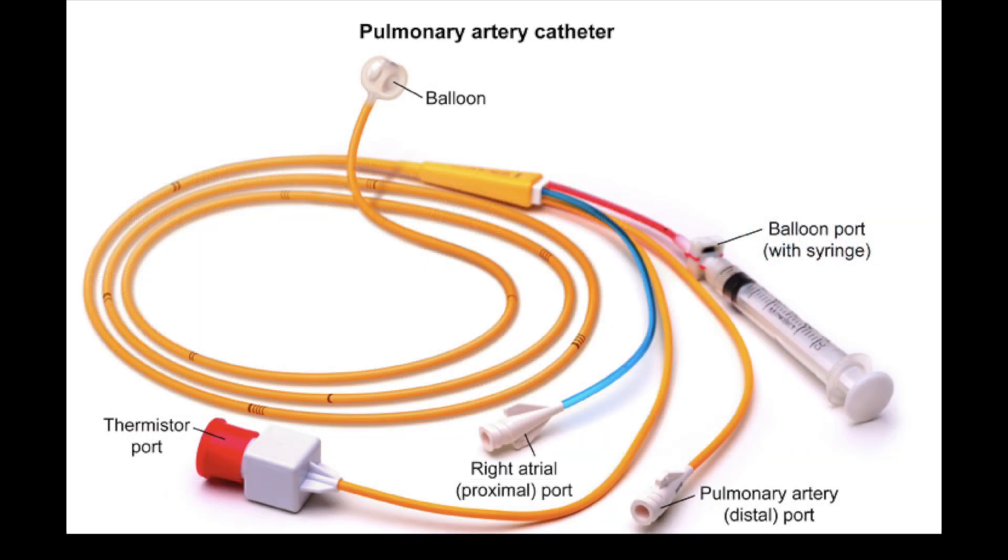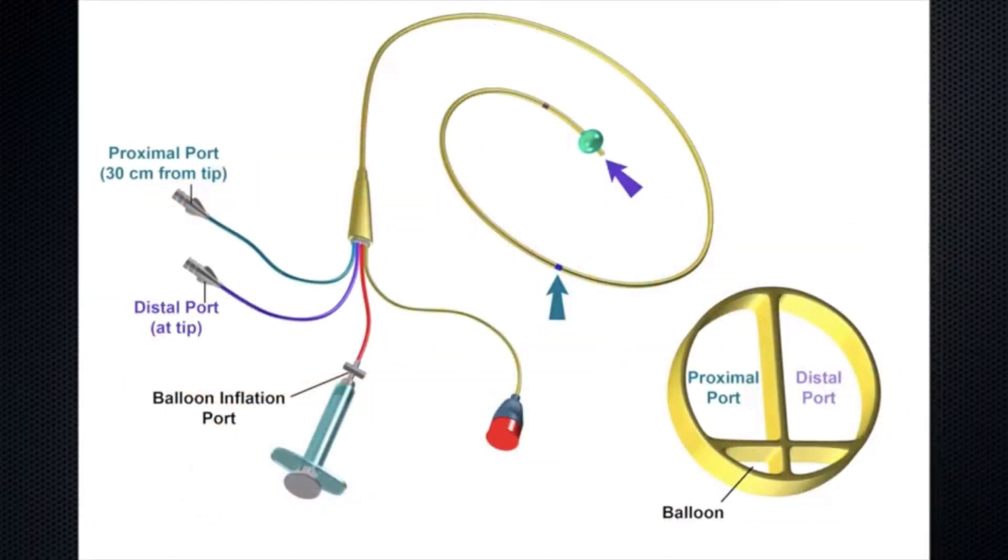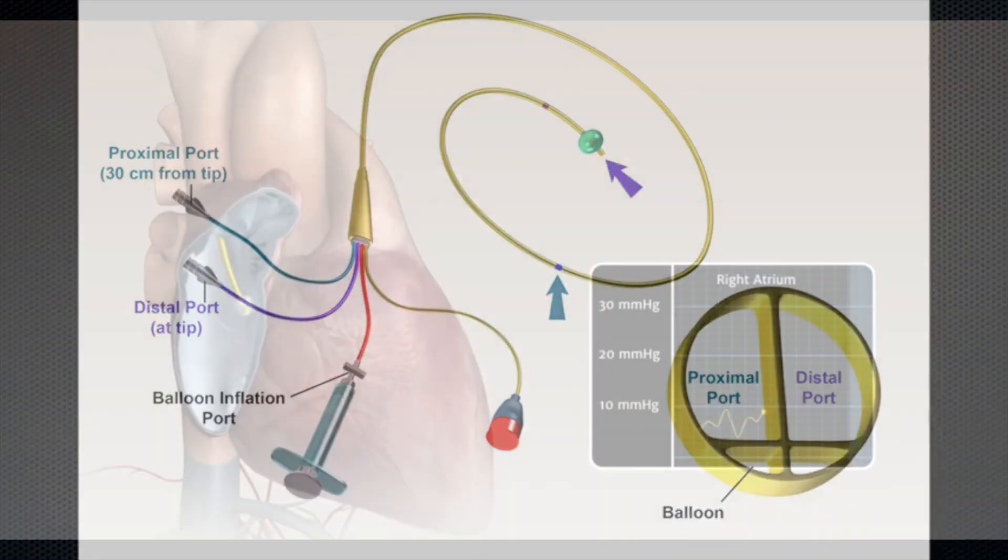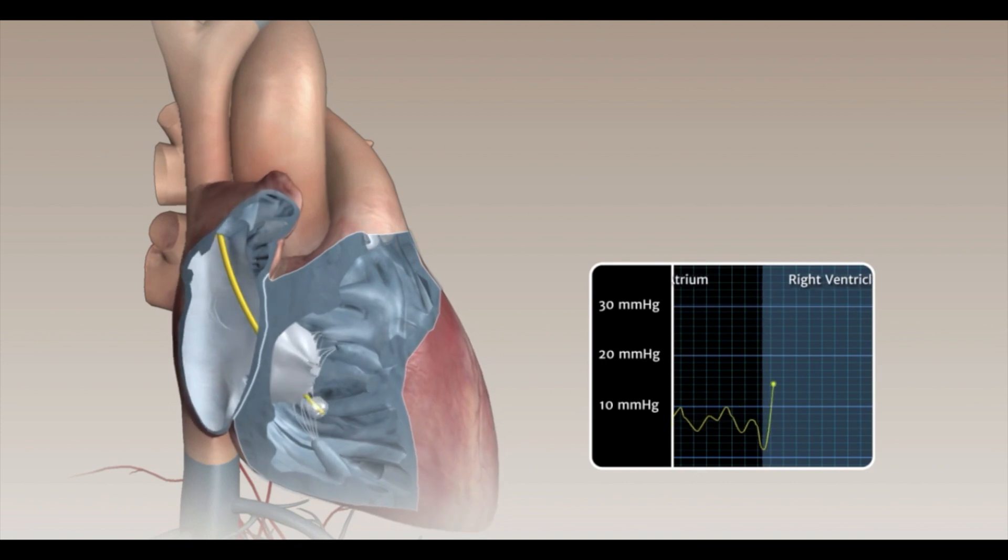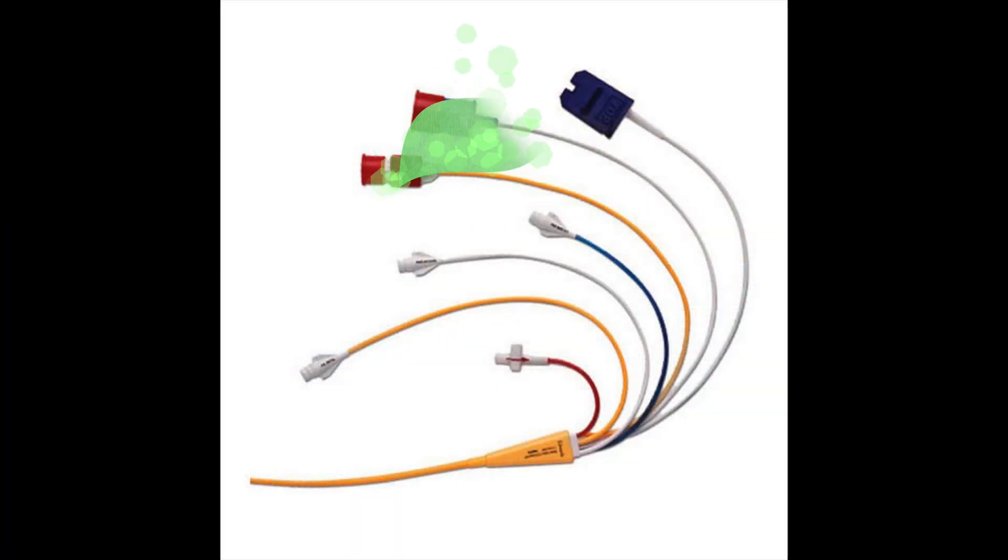Continuous cardiac output is obtained by the thermodilution method, which is a pulmonary catheter that contains a thermal filament 10 cm in length, in addition to the thermistor located near the distal tip. The thermal filament is in proper position when it is located in the right ventricle. The filament emits 7.5 watts of thermal energy into the surrounding blood. The thermistor detects the changes in blood temperature, and the continuous cardiac output computer plots thermal curves for calculation of cardiac output.